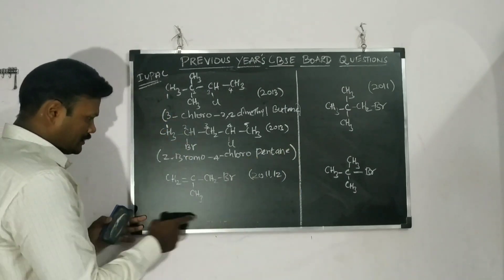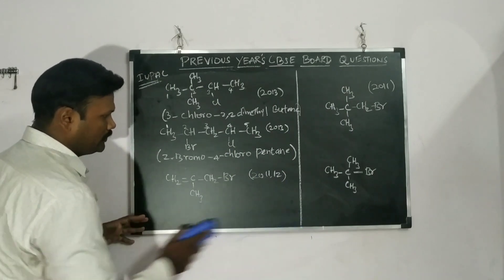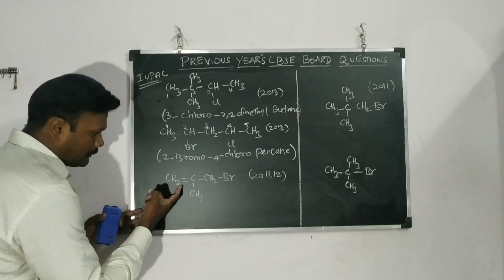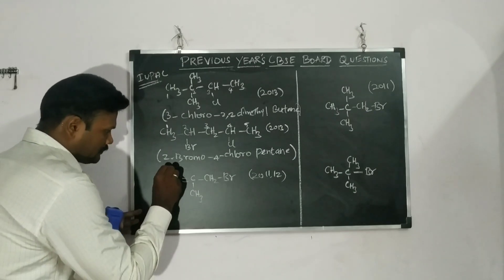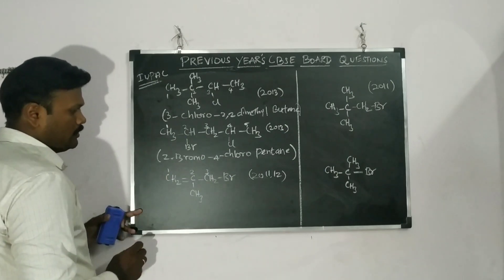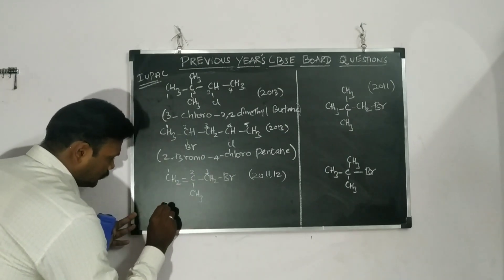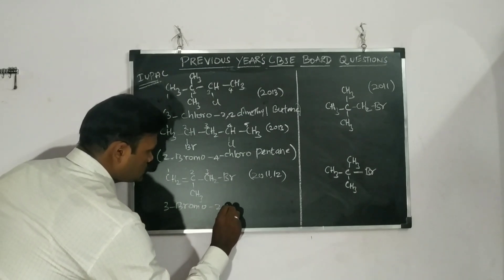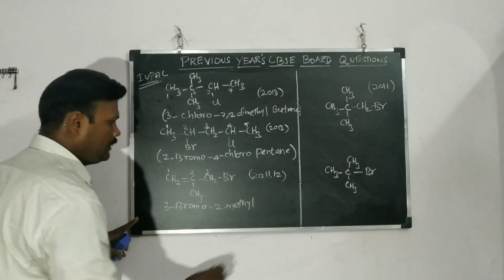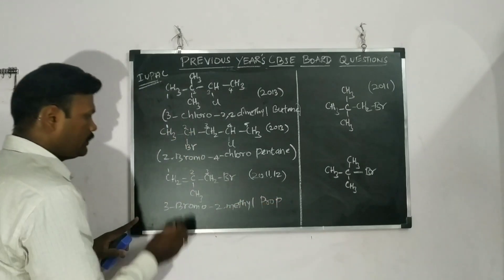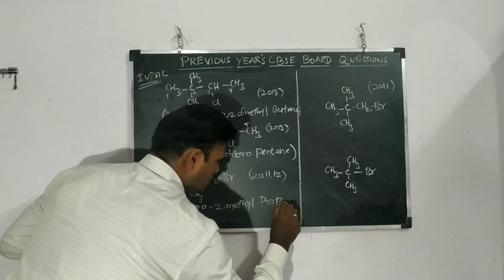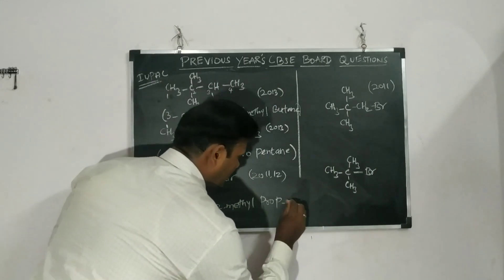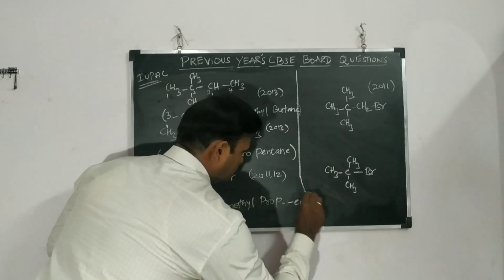This IUPAC name was asked in both 2011 and 2012. A double bond is present, and we start numbering from this end: one, two, three. According to that — 3-bromo, 2-methyl. The name is 3-bromo-2-methylprop-1-ene.